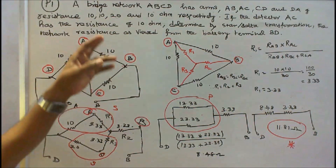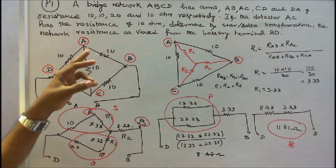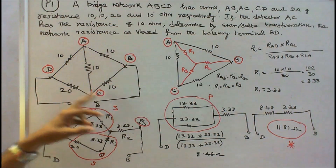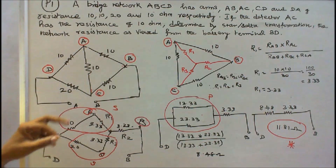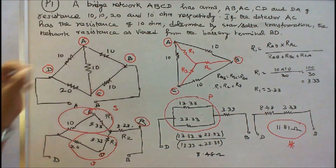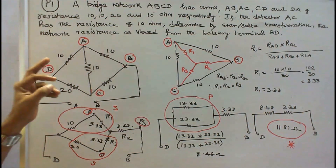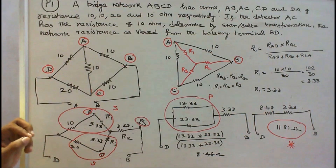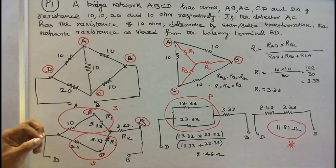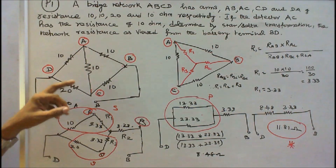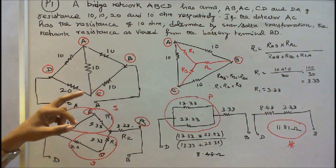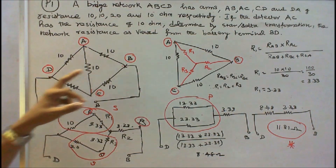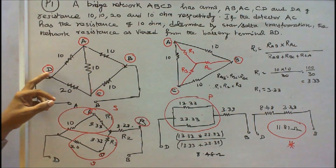Problem number one. A bridge network ABCD has arms AB, AC, CD, and DA of resistance 10, 10, 10, and 20 ohms respectively. If the detector AC has a resistance of 10 ohms, determine by star-delta transformation the network resistance as viewed from the battery terminal BD. We have to find the resistance across points B and D.